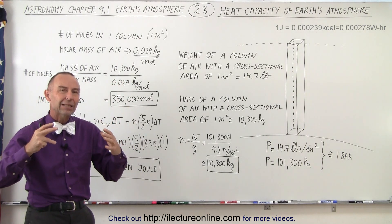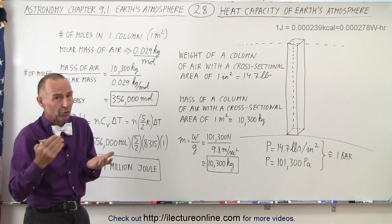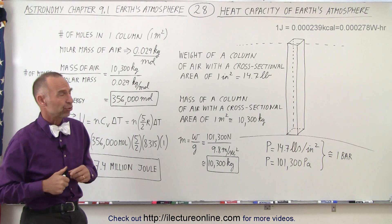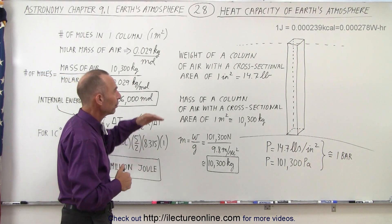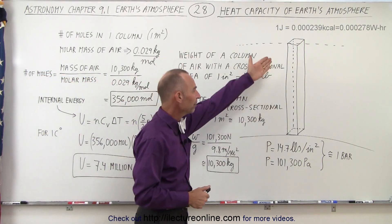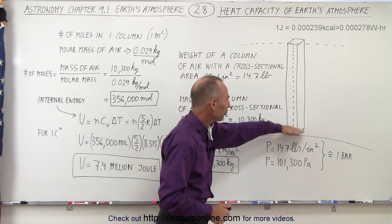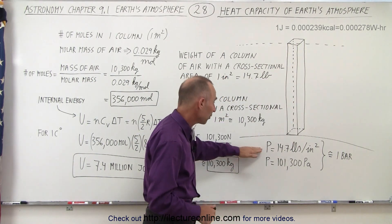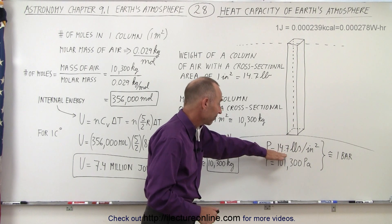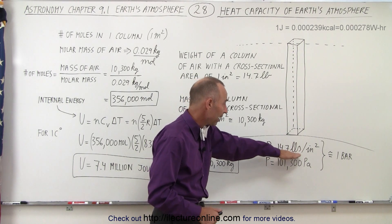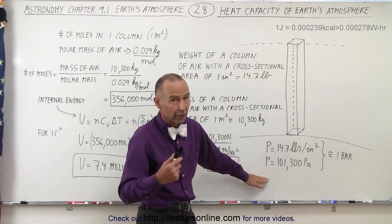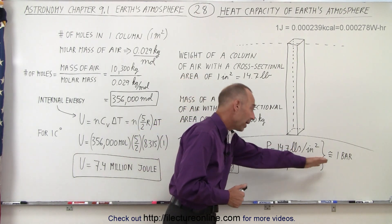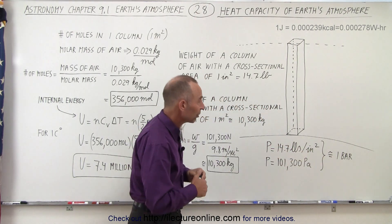How much heat can the Earth hold? Of course, the more heat you put into the Earth's atmosphere, the higher the temperature. So here we have what we'd call a column of air, all the way from the surface of the Earth up to space. The pressure at the bottom, at sea level, is 14.7 pounds per square inch, or 101,300 pascals — that means about one bar, which is atmospheric pressure.